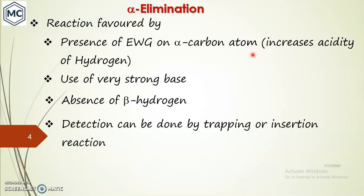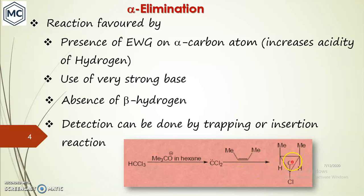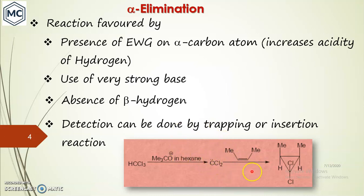The carbene intermediate can be detected by trapping via an insertion reaction. For example, with chloroform in the presence of base, you get dichlorocarbene first, then this carbene can be inserted into an alkene to form a cyclic product. You can see that the dichlorocarbene is inserted across the double bond — this is detected by such methods, and the evidence for carbene formation is the Skattebøl (Simmons–Smith type) reaction.